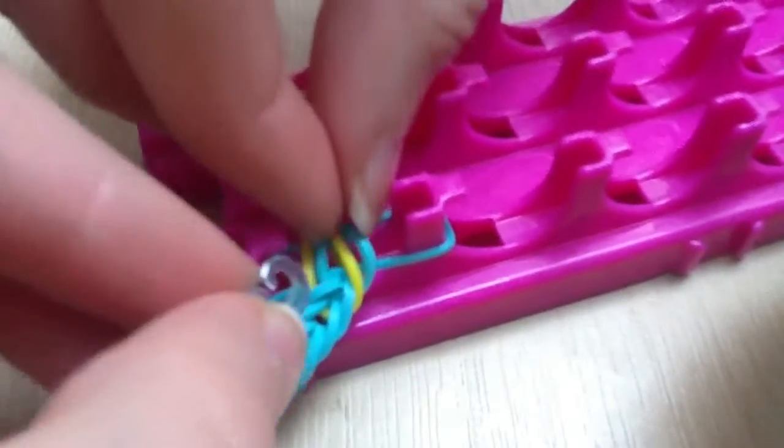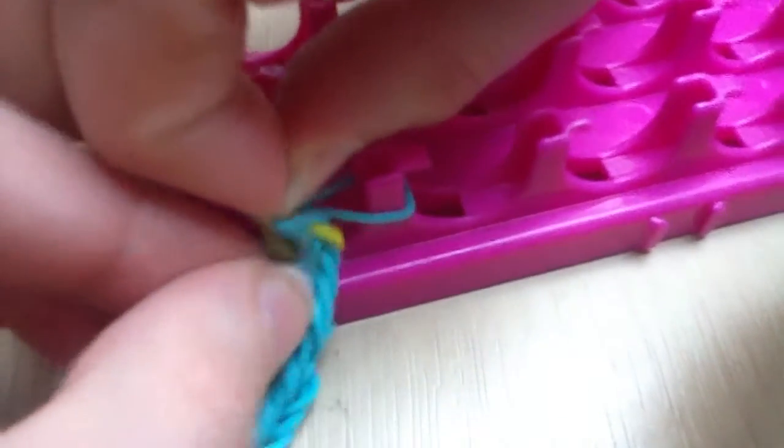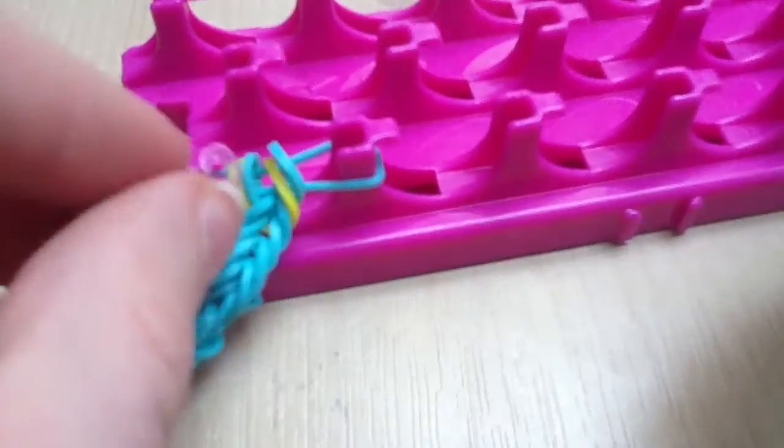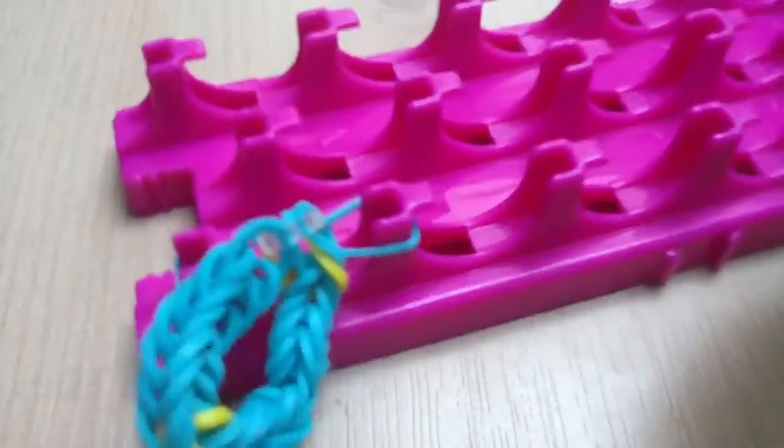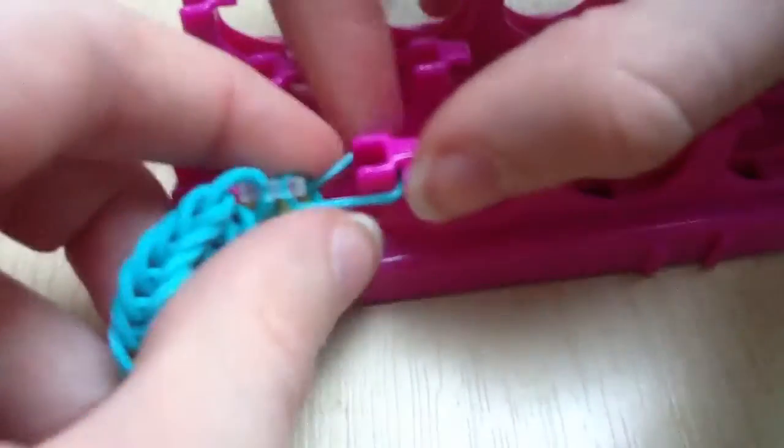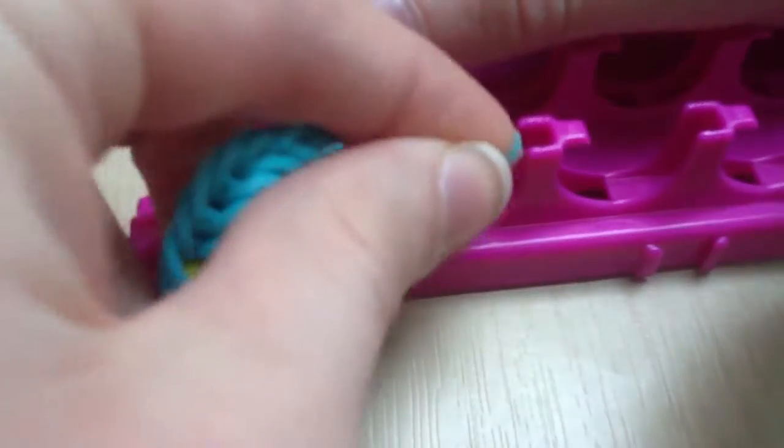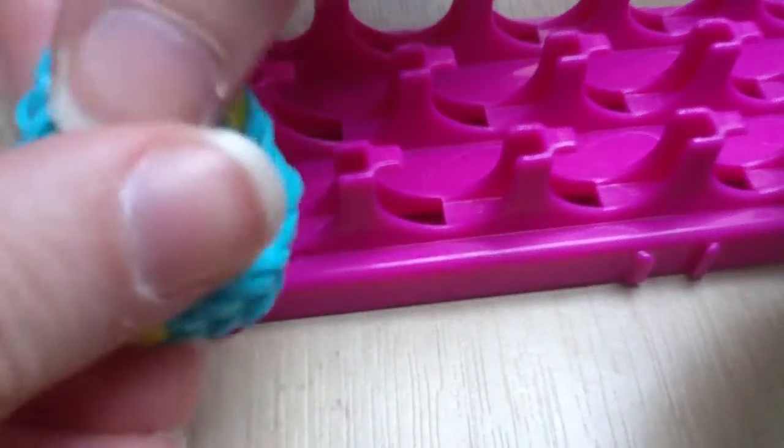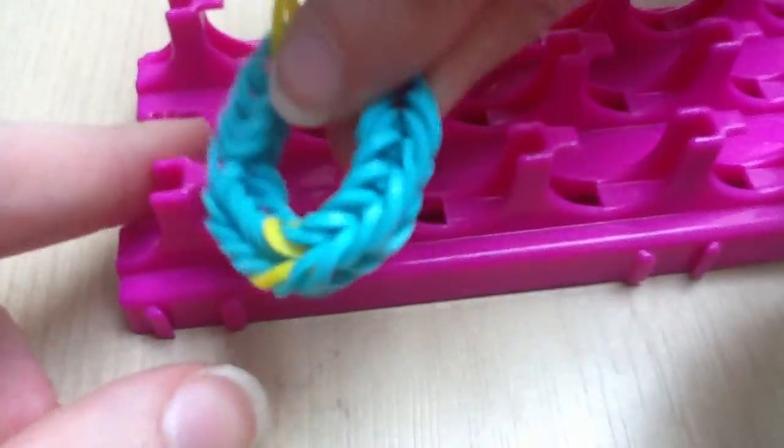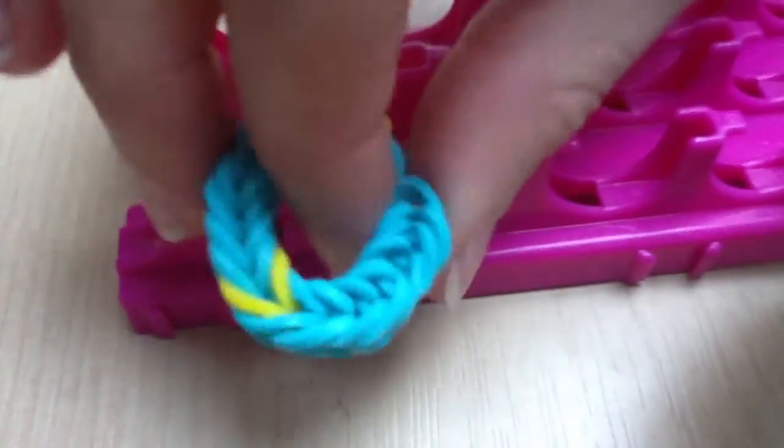Take your C-clip and put it on the other end like so, then just pull it off. You should have two bands coming off as well. Then you're done - you have your fishtail, and it's ready to wear and share.